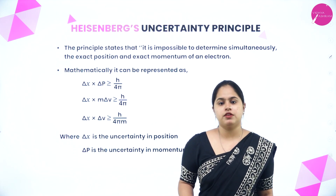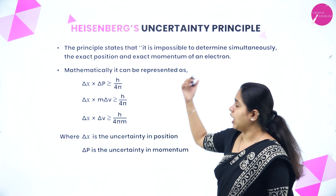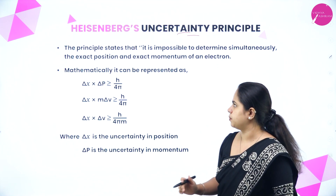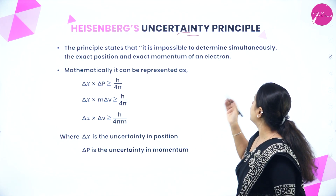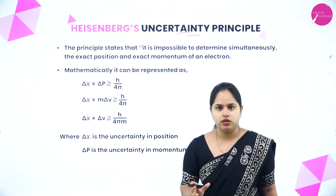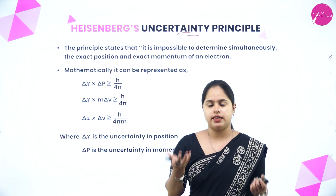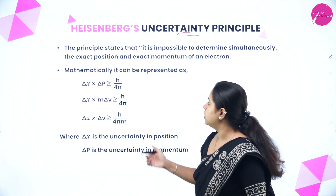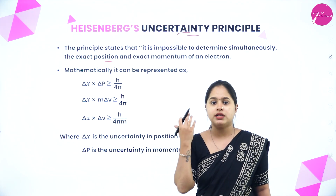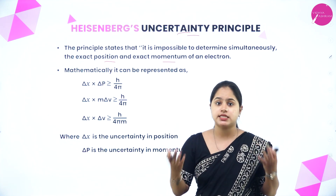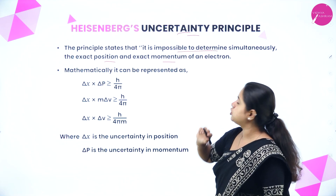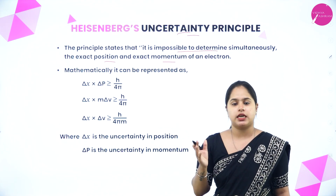Moving on to the second development leading to the quantum mechanical model of atom: Heisenberg's uncertainty principle. The principle states that it is impossible to determine simultaneously the exact position and exact momentum of an electron. At the same time, you won't be able to measure both position and momentum — either the momentum or the position can be calculated at a particular time, but not simultaneously.